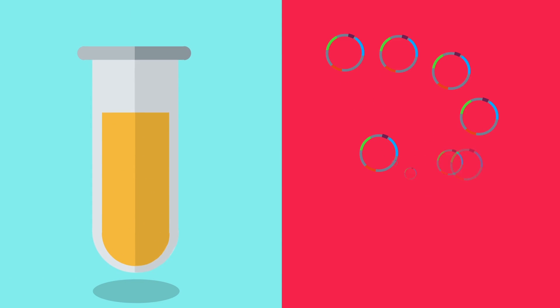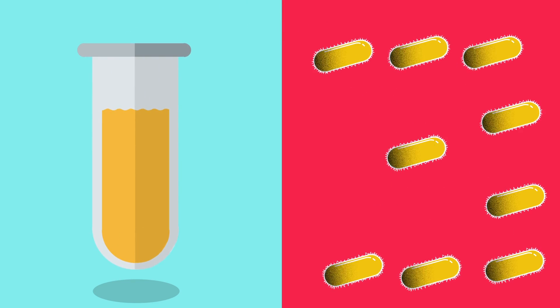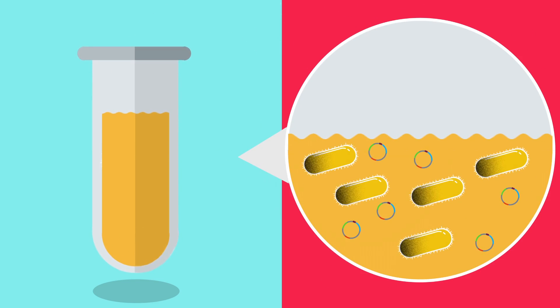The second step is to get the plasmid into the bacteria, which is done by bathing the plasmids and the bacteria in a calcium chloride solution, which makes it easier for the bacteria to take up the plasmids.